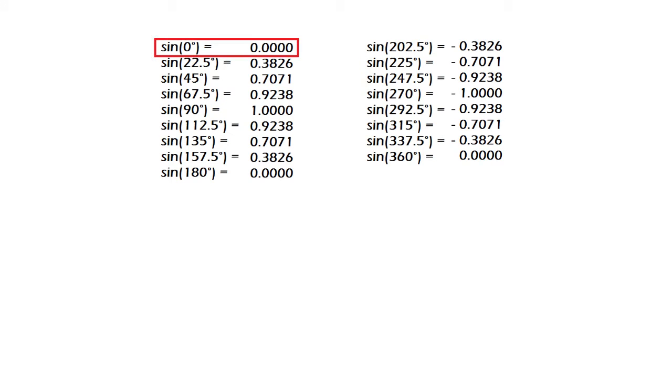For example, if you calculate the sine of 0 degrees in a scientific calculator, you get 0 as a result. If you calculate the sine of 22.5 degrees, you get 0.3826 as long as your calculator is set to degrees and not radians, which are a different angle measurement unit.